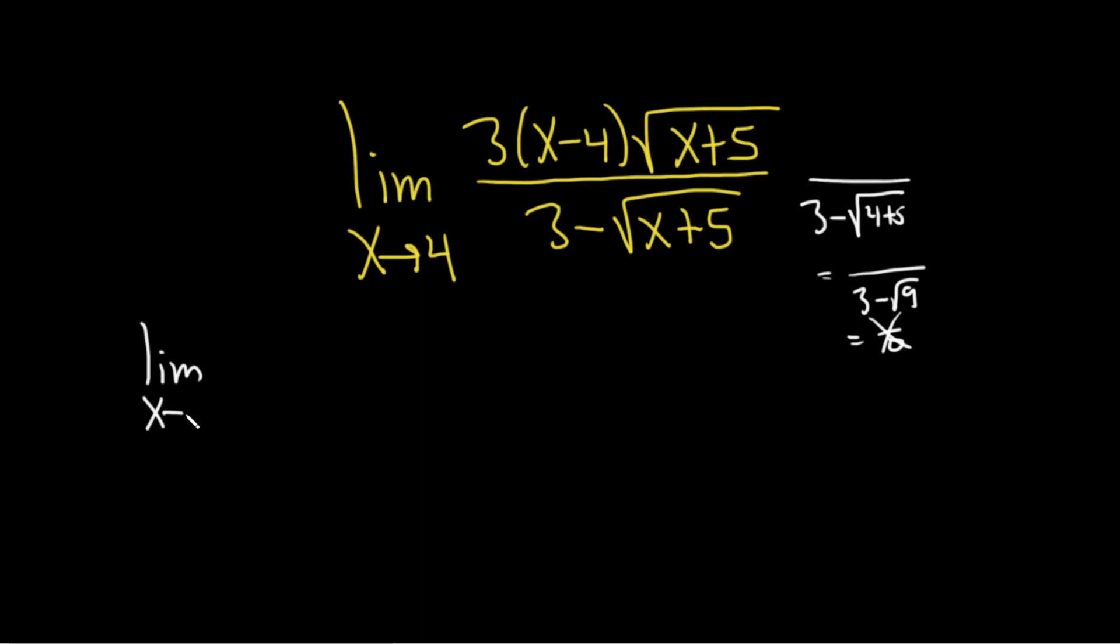We have the limit as x approaches 4, and here we have 3x minus 4 square root x plus 5, all being divided by 3 minus the square root of x plus 5. And so the trick is, whenever you have a limit and it's got a square root and it's got a plus or a minus, and you can't just compute it by plugging in the number, a good strategy to try next is something called rationalizing.